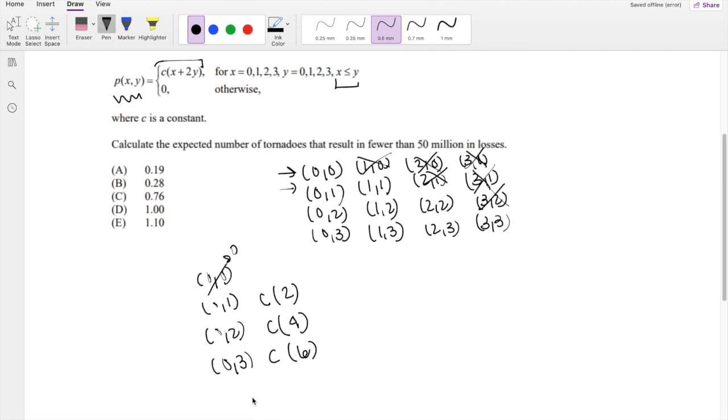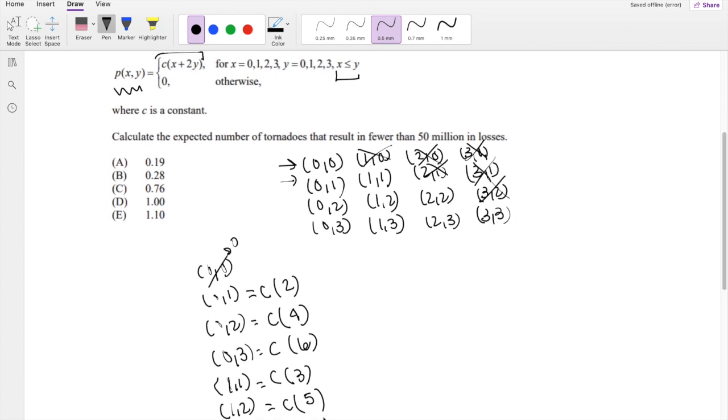Keep going. For 1, 1, it will be C times 3. For 1, 2, it's going to be C times 5. For 1, 3, it's going to be C times 7.